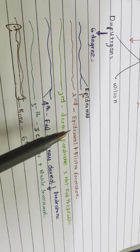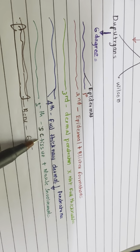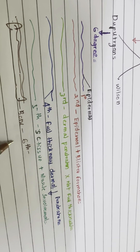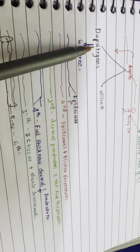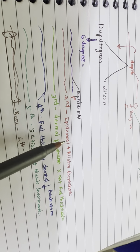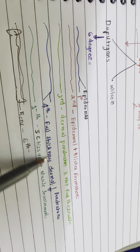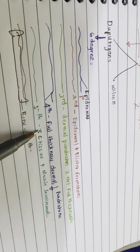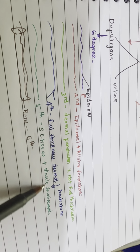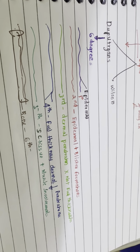The layers involved are: Epidermis, Dermis, Full Thickness, Subcutaneous Tissue, Muscle Involvement, and Bone Involvement — representing the 5th degree.